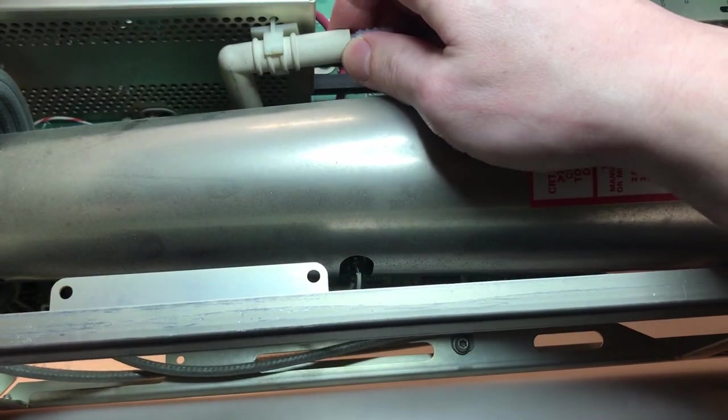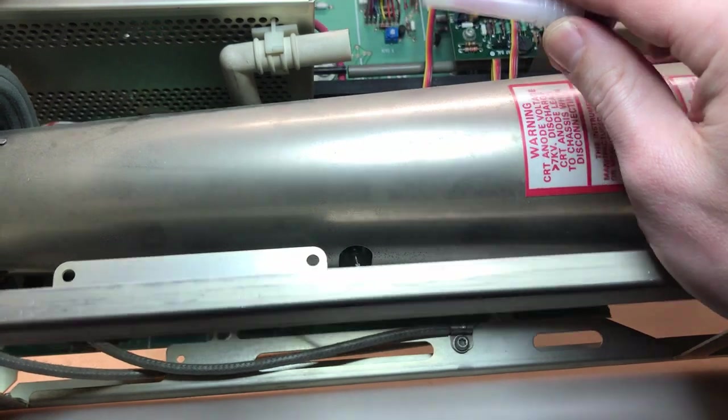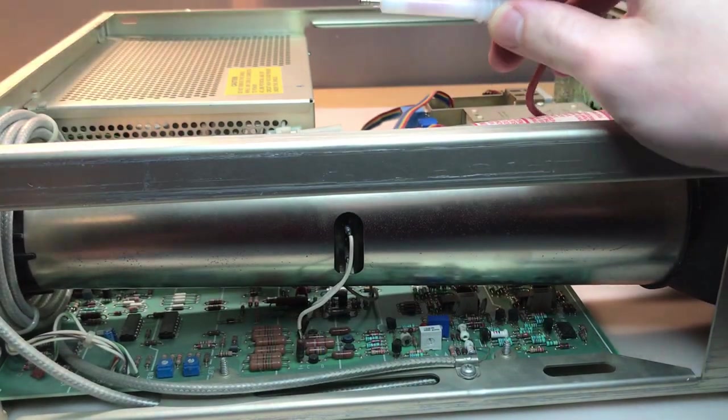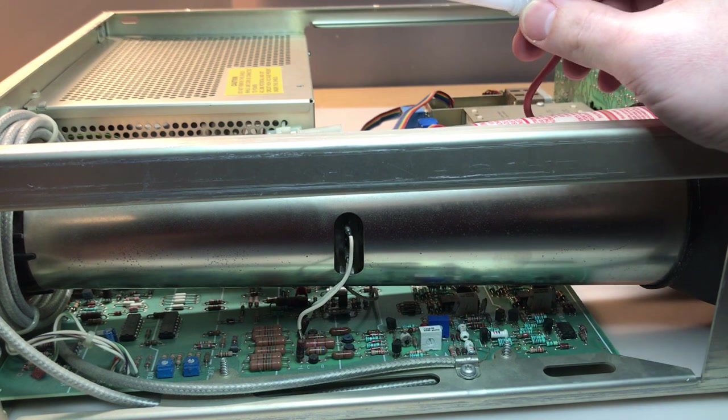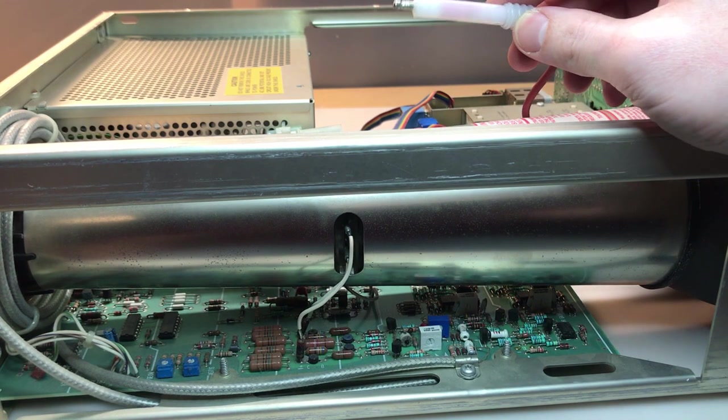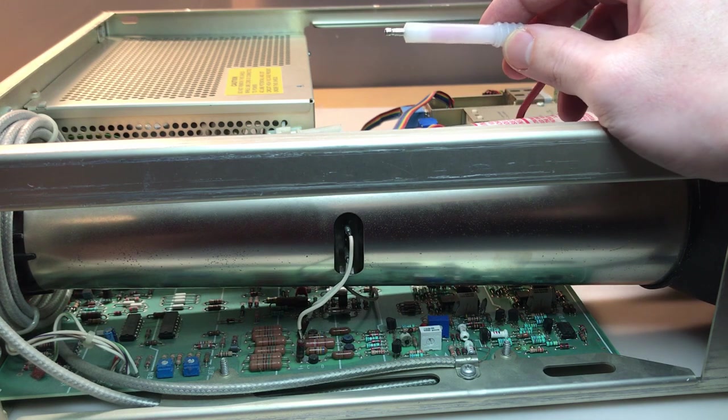So the anode's up here. It just unplugs there, and I've already done this, so ordinarily it would be a little more safe, but I've already done this. You just pull it out. Here's the anode tip right there. When this is live, it looks like 7,000, 8,000 volts, and even when it's been off for a while, it can still keep a charge.